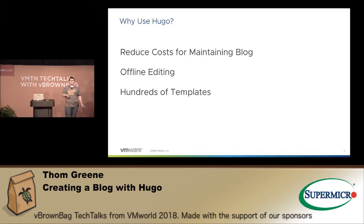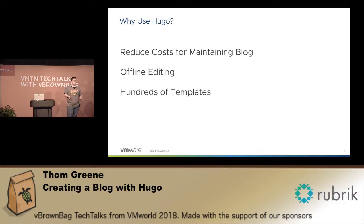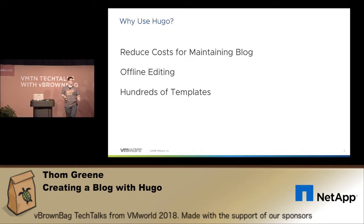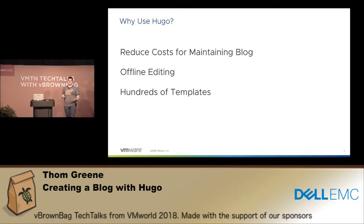There are hundreds of templates and I love changing up the way the blog looks. When I was working with Jekyll, I was trying to build new templates and I would have mixed success getting those published — sometimes they worked, sometimes they didn't. Sometimes I didn't have a dependency on one computer that I had on another, and I used five different computers at different points. So I wanted to be able to have it all offline and together.